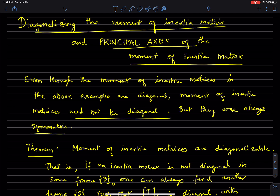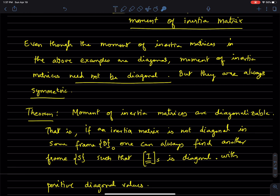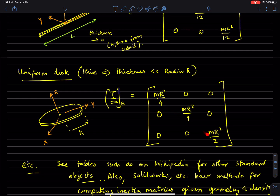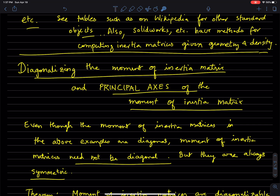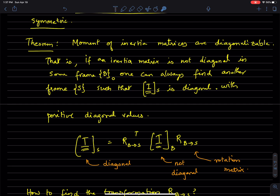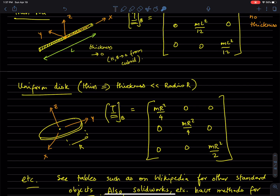This video is about diagonalizing the moment of inertia matrix and what we call the principal axes of the moment of inertia matrix. Even though these examples had diagonal moment of inertia matrices, moment of inertia matrices in general do not need to be diagonal. But they are always symmetric. Here is an important theorem from basic linear algebra: moment of inertia matrices are always diagonalizable. If an inertia matrix is not diagonal in some frame B, one can always find another frame S such that the moment of inertia matrix in that frame is diagonal.